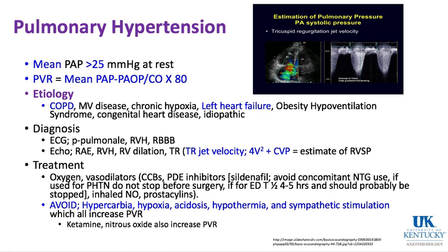Other drugs include inhaled nitric oxide, used more for severe pulmonary hypertensive episodes after heart surgery, lung transplantation, or heart transplantation. Occasionally patients are on intravenous medicines continuously through PICC lines to decrease their pulmonary blood pressure.